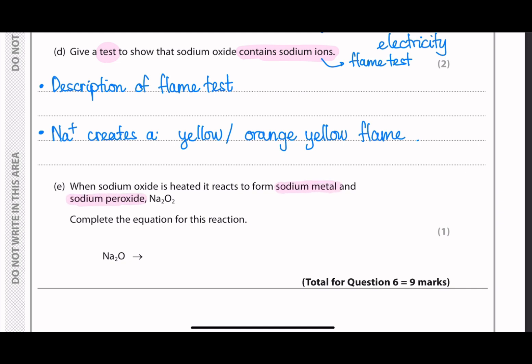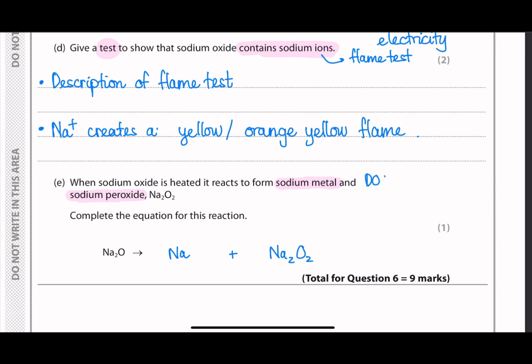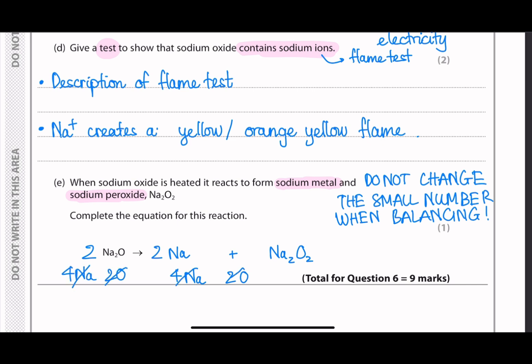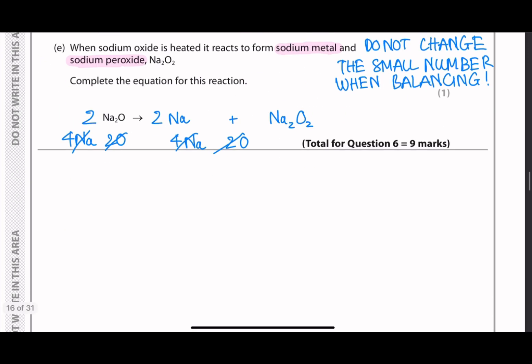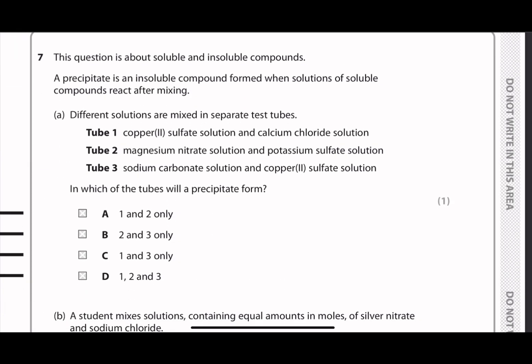Next question. So they asked to complete the equation for this reaction. And they give you the product, sodium metal and sodium peroxide, Na2O2. So the rule to balance equations is that you cannot change the small numbers. You can only add more of the big number on the left of each compound. So here we just add 2 to the sodium on each side first, and then we count the number of oxygen, and then they balance out. And that's the balancing complete.